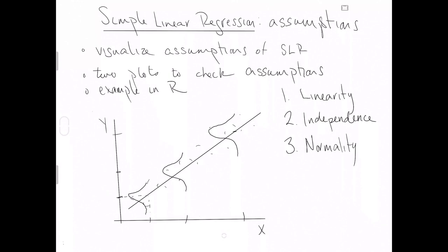If we observe a bunch of data at a given value of x, they should all fall relatively close to the line. We don't want observations way out indicating heavy right skew, or way down indicating heavy left skew. The fourth assumption is same variance at all values along the x-axis — that is, each normal distribution defined along the line has the same standard deviation sigma, no matter where you are.